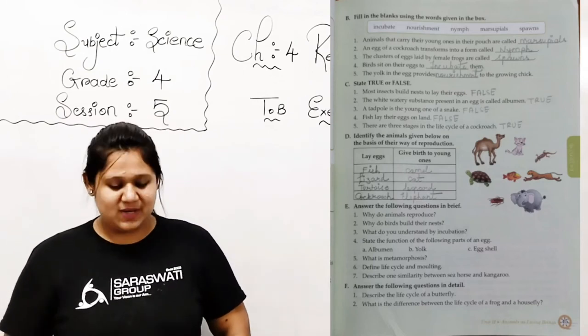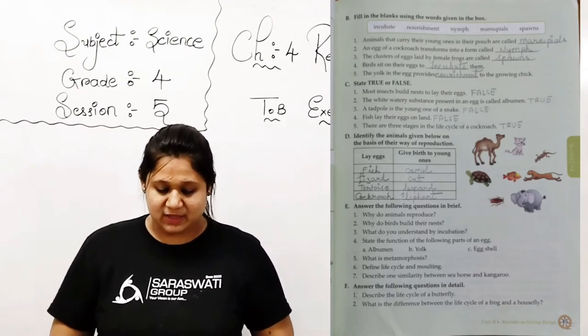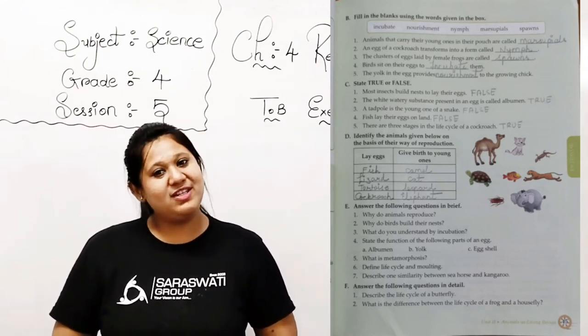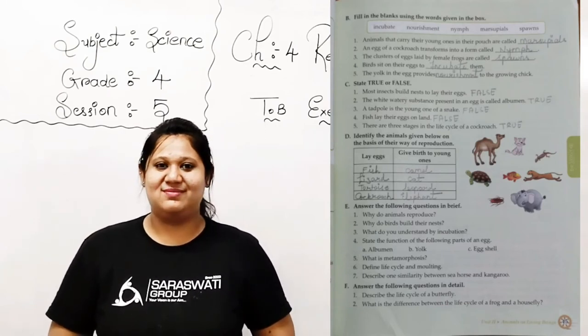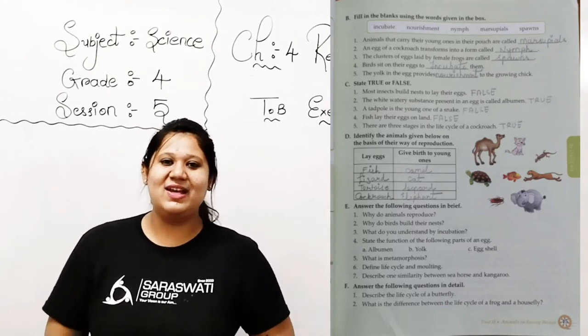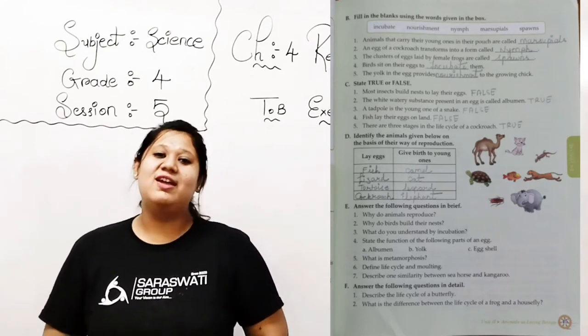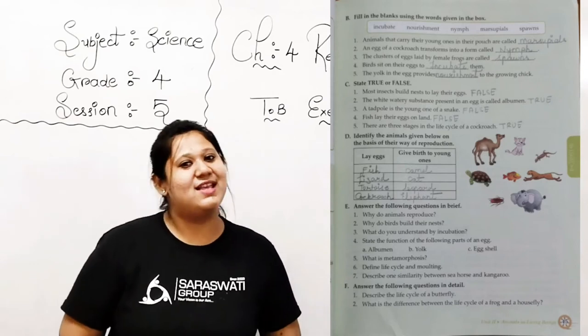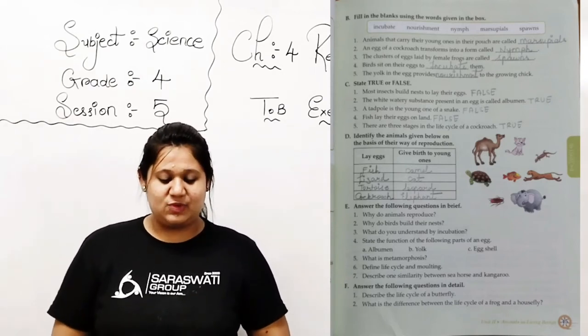Now number 4: fish lay their eggs on land. Of course not. Fish are water animals, right? So naturally they are not laying eggs on land. So this statement is also incorrect. So please write down false. Now last one, number 5: there are three stages in the life cycle of a cockroach. Yes, this is correct. First it lays eggs, then it converts into nymph, and then after it gets matured as a cockroach. So this statement is correct. So write down true.